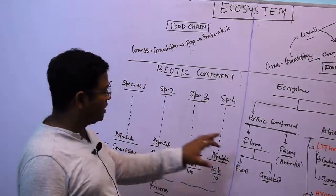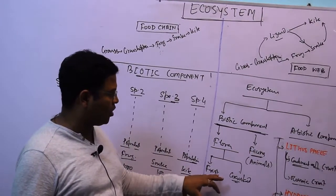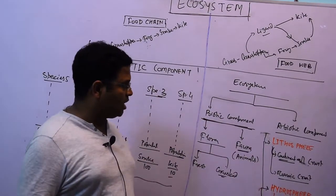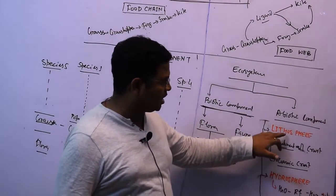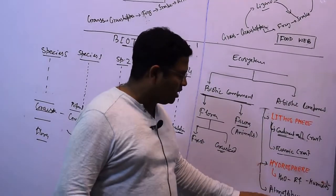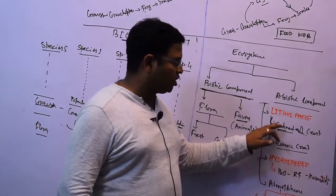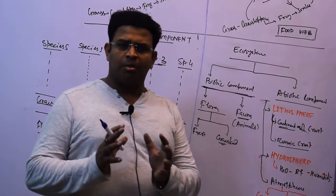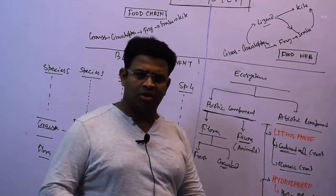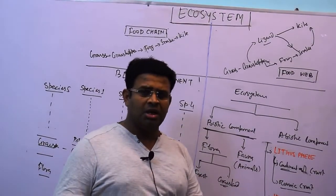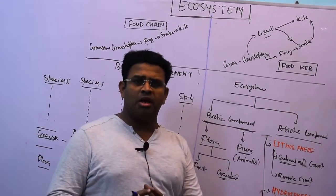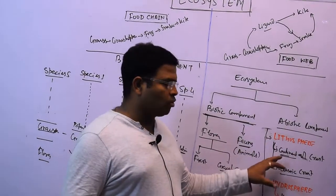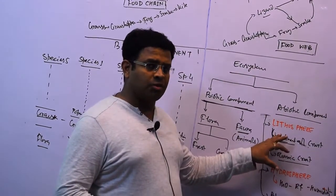The biotic community is made up of flora and fauna — forests, grasslands, and animals. At the same time, the abiotic community includes the lithosphere, hydrosphere, and atmosphere. The lithosphere includes the continental crust, ocean crust, mountains, plains, and all within the ocean — different kinds of structures providing different kinds of minerals and soils, and we cannot exist without this.